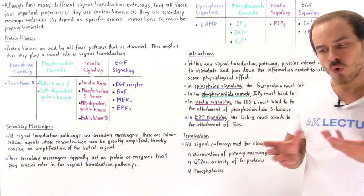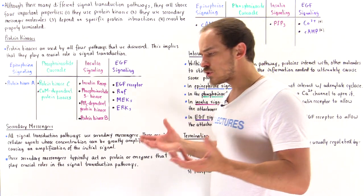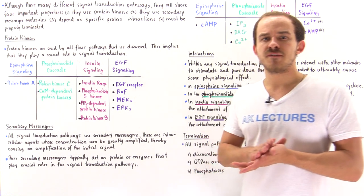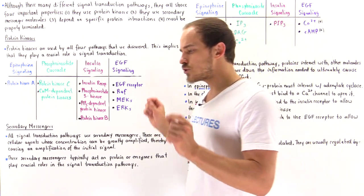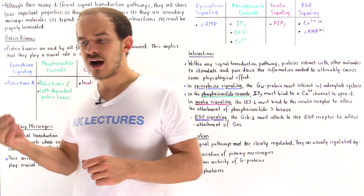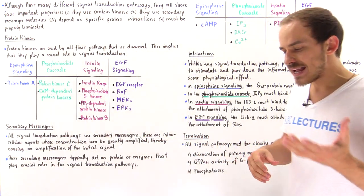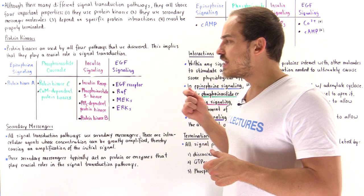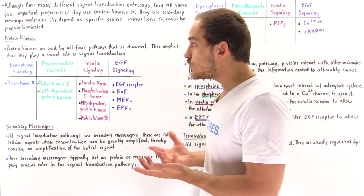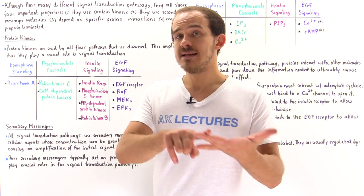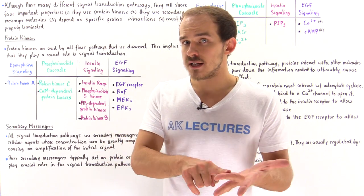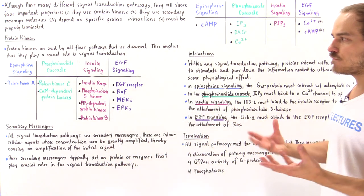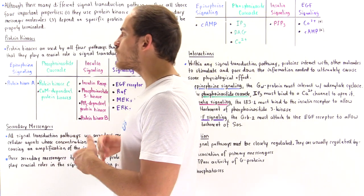Although the cells of our body can use all sorts of different types of signal transduction pathways to initiate cellular processes that ultimately create some type of physiological effect, all these signal transduction pathways have four important properties in common. To demonstrate what these principles are, I'd like to focus on the four different types of pathways that we discussed so far: epinephrine signaling, insulin signaling, EGF signaling, and the phosphoinositide cascade.